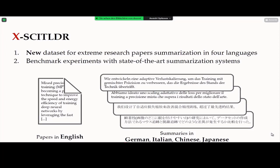To this end, today we present a new dataset for extreme research paper summarization in four different languages: German, Italian, Chinese, and Japanese. In order to evaluate current state-of-the-art summarization systems, we also performed benchmark experiments. With these datasets, we can start building summarization systems which can support more researchers in the world.